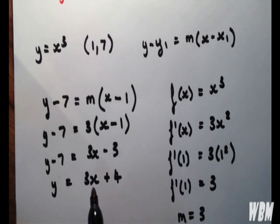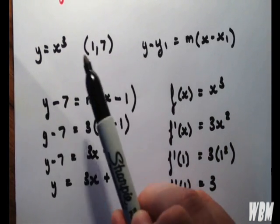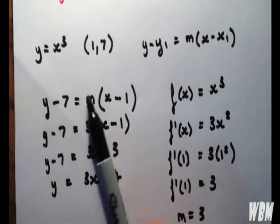And there we have our equation of a tangent line given a point. Please look at example number 2 in the video series where we'll be considering a couple of more difficult problems.